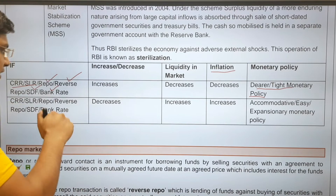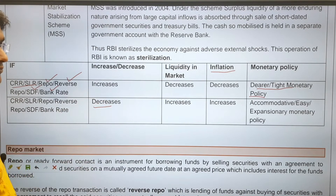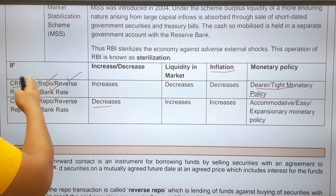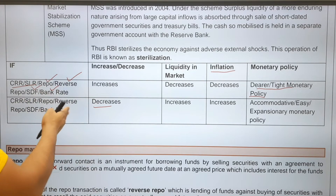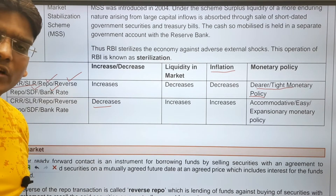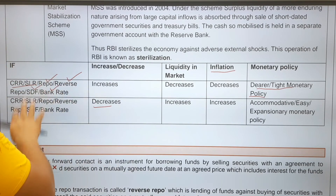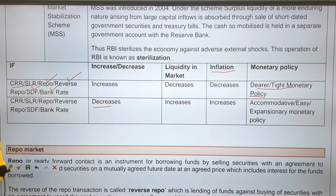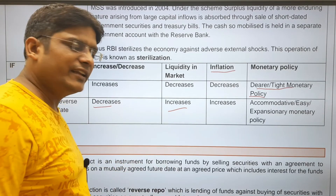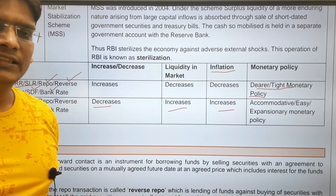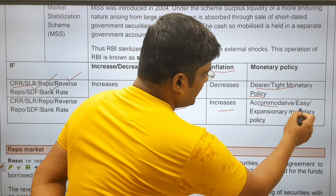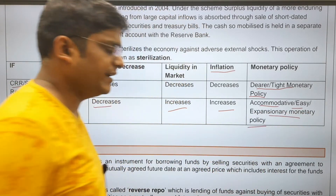In case of recession, RBI decreases repo rate, bank rate, CRR, and SLR. RBI did this during COVID-19, when there was recession around the world. When RBI decreases these instruments, liquidity in the market increases, inflation increases moderately, and the economy comes out of recession. This is called accommodative or expansionary monetary policy.